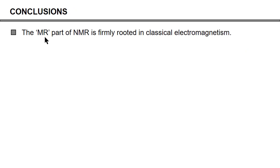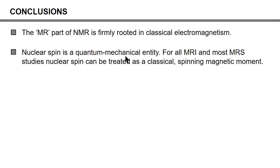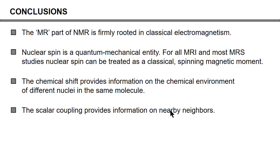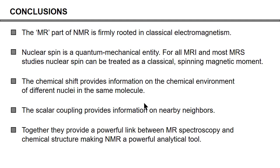In conclusion, the MR part of NMR is really a classical concept. Nuclear spin is not a classical concept, but for our purposes — all of MRI and a lot of MRS — it can simply be seen as a classical spinning magnetic moment. The chemical shift provides a lot of information about the immediate chemical environment of the nucleus and therefore about the chemical structure. Scalar coupling does the same but gives information on nearby neighbors. Together, chemical shift and scalar coupling provide a very powerful link between the NMR spectrum and the chemical structure, making NMR a very powerful analytical tool, especially in chemistry, protein NMR, and in vivo MRS.